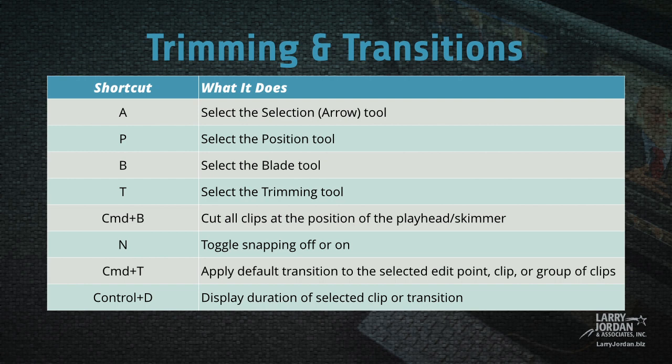For trimming and transitions, A selects the arrow tool. P the position tool. B the razor blade tool. T the trimming tool. Command-B cuts all clips at the position of the playhead or the skimmer. N toggles snapping on or off. Command-T applies the default transition to the selected edit point, selected clip, or selected group of clips. And Control-D displays the duration of a selected clip or transition.